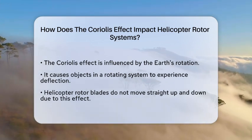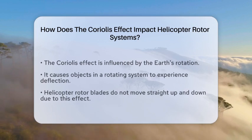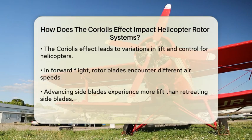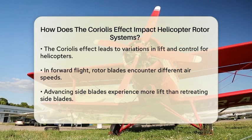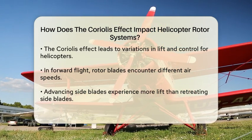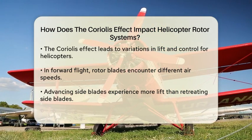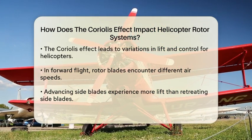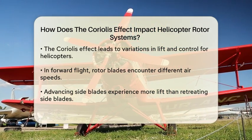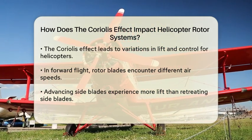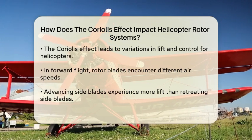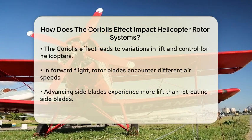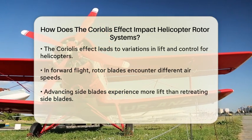The Coriolis effect occurs because the Earth spins on its axis. As a result, objects moving in a rotating system, such as a helicopter rotor, experience a deflection. For helicopters, this means that the blades do not just move straight up and down. Instead, they are affected by the rotation of the Earth beneath them. This can lead to variations in lift and control.